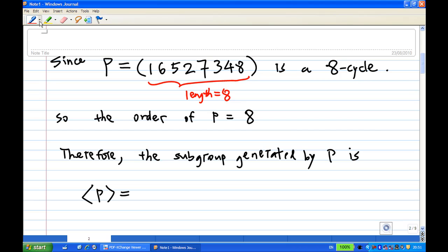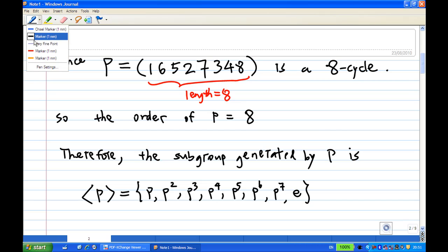So the subgroup generated by P equals P, P², P³, P⁴, P⁵, P⁶, P⁷, and E.